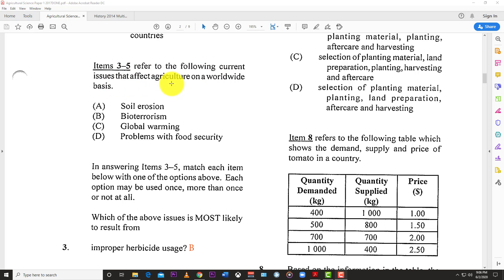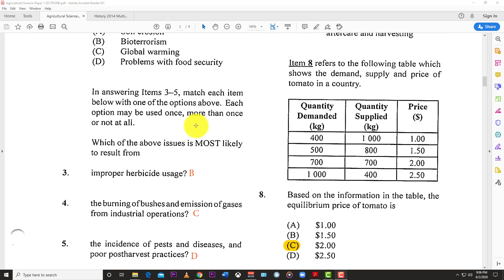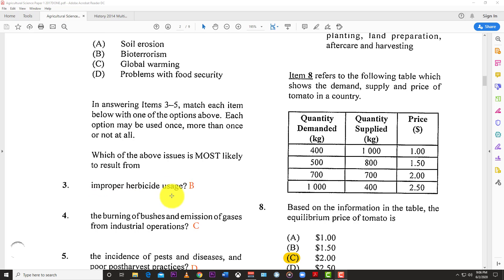Items three to five refer to the following current issues that affect agriculture worldwide. The options are: soil erosion, bioterrorism, global warming, and problems with food security. Number three: Improper herbicide use, and the best answer for that would be B, bioterrorism.